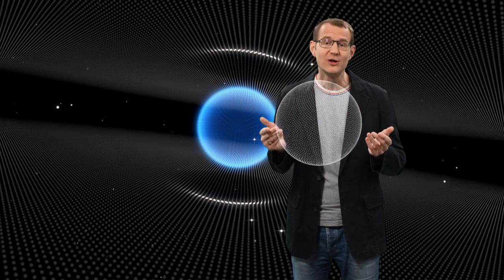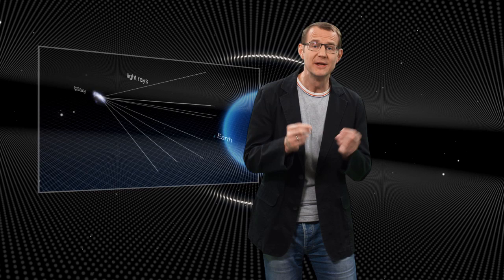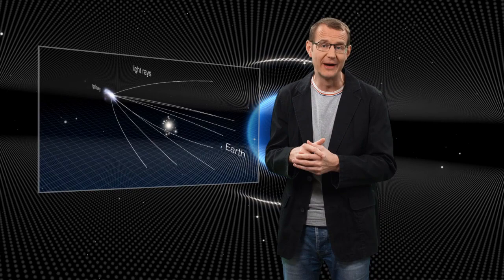In space, light travels invariably along straight lines. But what's a straight line? Well, it's the shortest distance between two points. But in a curved space, the shortest distance between two points may not necessarily look particularly straight to us. And what that means is that when a light ray passes very nearby a massive object that curves the space around it, the light ray is bent.